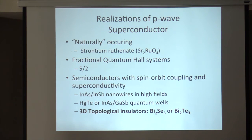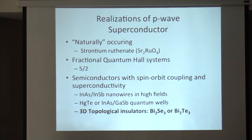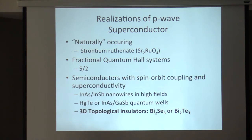There have been a number of proposals for P-wave superconductors. Some are naturally occurring compounds such as strontium ruthenate. Certain fractional quantum Hall states, of course the 5/2, are historically the first system proposed to have non-Abelian exchange statistics. In recent years it's been appreciated that you can take semiconductors with strong spin-orbit coupling connected to superconductors to get a robust form of P-wave superconductivity, such as indium arsenide or indium antimonide nanowires with large Zeeman splitting, and certain quantum wells forming two-dimensional topological insulators. The focus of this talk will be on proposals centered on three-dimensional topological insulators such as bismuth selenide or bismuth telluride.